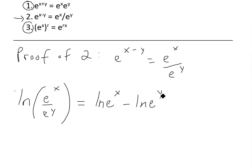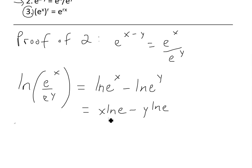Then we could use another law, which is bringing these exponents down. So we get x times ln e minus y ln e. And once again, ln e equals one. So you could write this as these just cancel: x minus y.